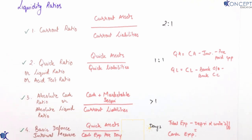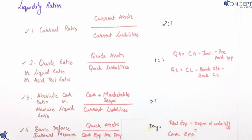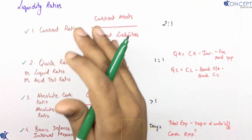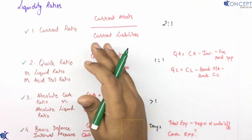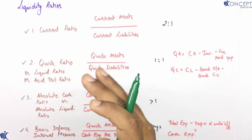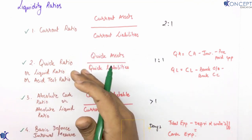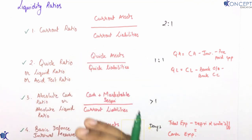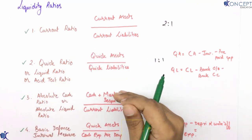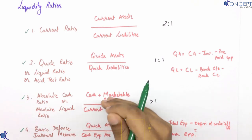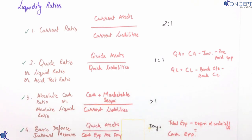To repeat: the first liquidity ratio is current ratio, the second is quick ratio, the third is absolute cash ratio, and the fourth is basic defense interval measure.